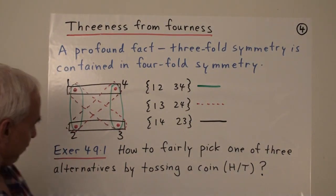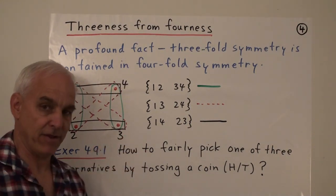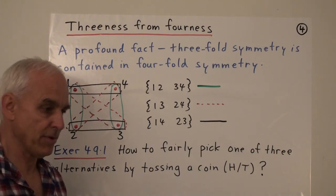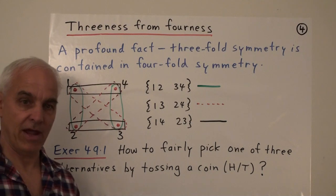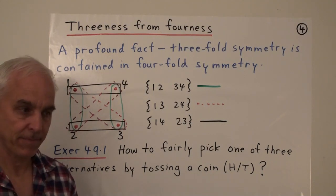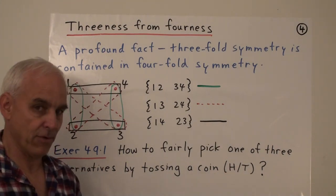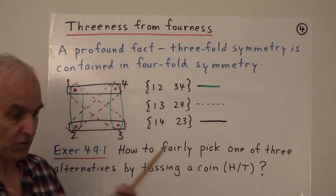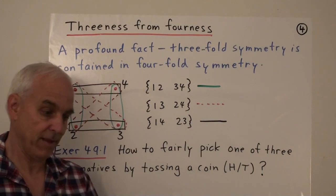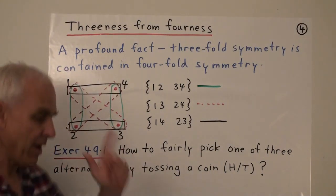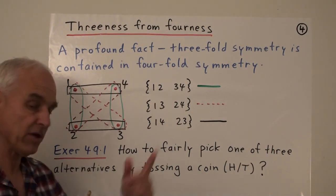Here's a fun exercise to appreciate that. Suppose three friends want to fairly decide who gets a free beer using only a two-sided coin. If there were two of you it'd be easy — just flip once. But with three people, how do you use that coin to fairly pick one of the three? And how do you do it most efficiently — can you do it with just two tosses?